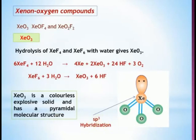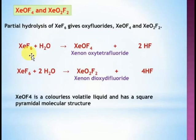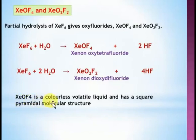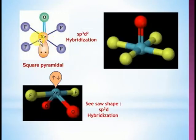Xenon oxyfluoride XeOF₄: partial hydrolysis of xenon hexafluoride gives xenon oxy tetrafluoride and hydrogen fluoride. Xenon dioxydifluoride (XeO₂F₂): xenon hexafluoride hydrolysis gives XeO₂F₂. Xenon dioxydifluoride is a colorless volatile liquid and has a square pyramidal structure.